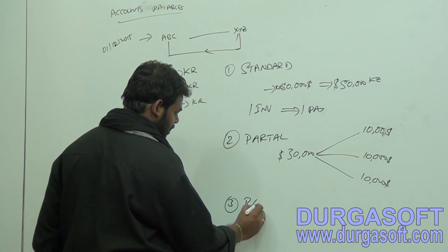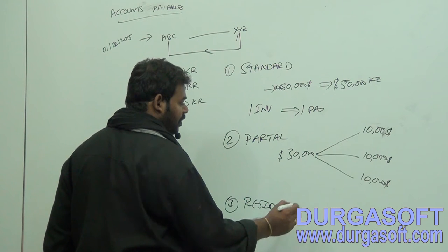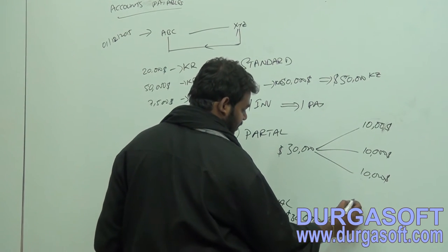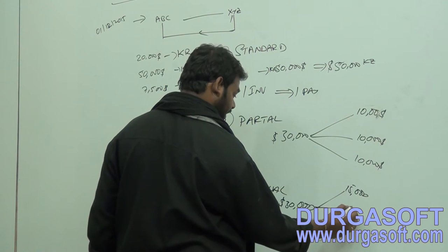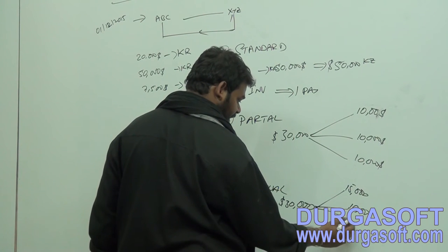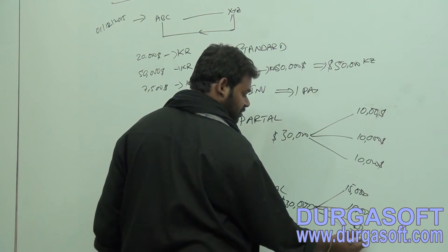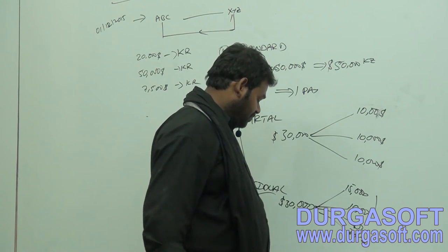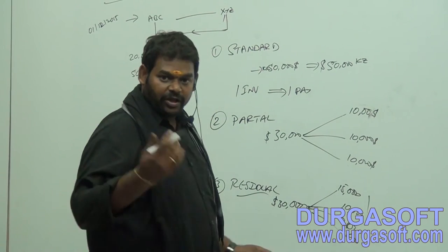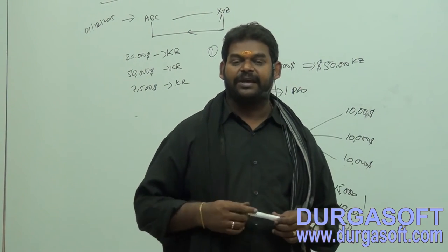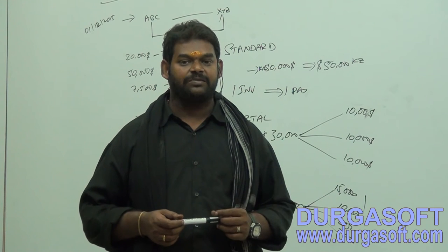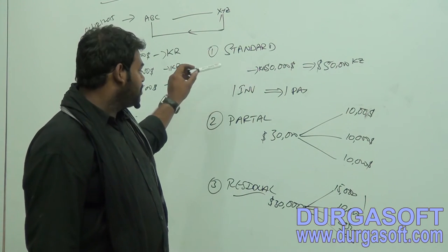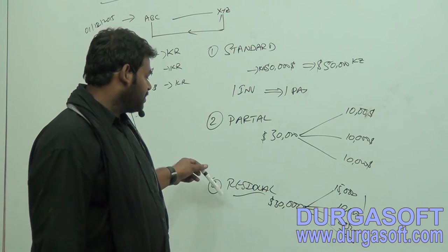The third and last type is called Residual. In residual, the same $30,000 invoice — I can pay the first $15,000, then $10,000, then $2,000, then $3,000 — the parts do not need to be equal. So there are three types of payment procedures: Standard, Partial, and Residual.